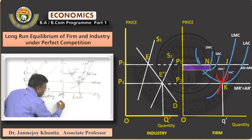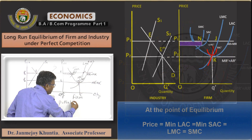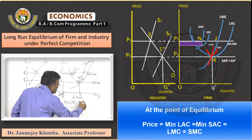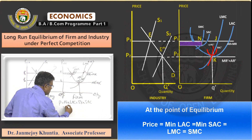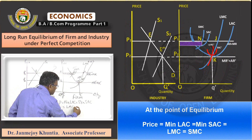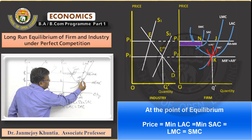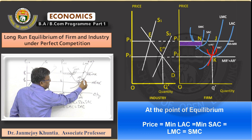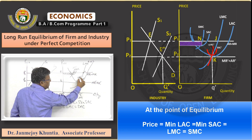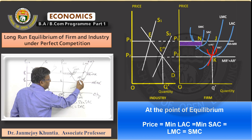So at the long-run equilibrium, price equals the minimum of long-run average cost, which equals the minimum of short-run average cost, which equals the long-run marginal cost, which equals the short-run marginal cost. The short-run cost curves at the point of equilibrium are SAC-dash and SMC-dash, and this particular plant in the short run is known as the optimum plant, which gives the equilibrium point and normal profit in the long run.